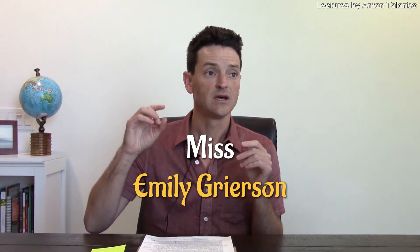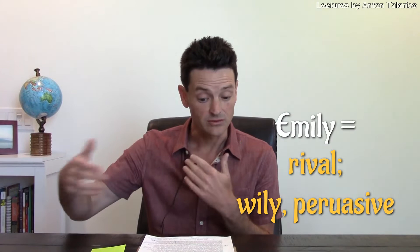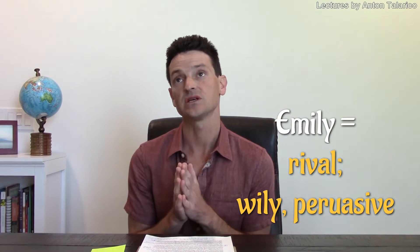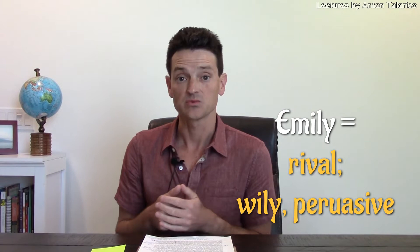Let's look at the names. Emily Grierson — notice the story is told in a present frame with flashbacks tying back to the present. We start right at the end when Emily Grierson dies. 'Emily' translates to 'rival' — wily and persuasive. 'Persuasive' is interesting when we think about what her life was supposed to be versus what it becomes, the different roles she plays. 'Grierson' means 'watchful,' and we'll see how that's used throughout.